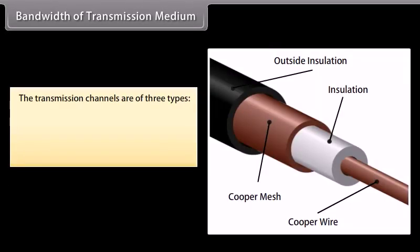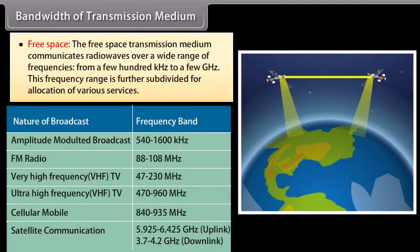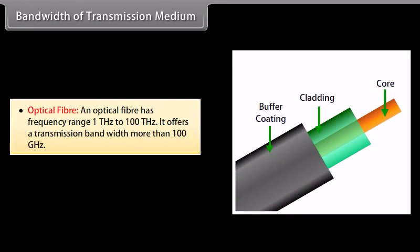The transmission channels are of three types. Wires: the widely used wire medium is a coaxial cable, with a bandwidth of about 750 MHz, usually operated below 18 GHz. Free space: communicates radio waves over a wide range of frequencies, from a few hundred kilohertz to a few gigahertz, further subdivided for various services. Optical fiber: has a frequency range of 1 THz to 100 THz and offers a transmission bandwidth of more than 100 GHz.